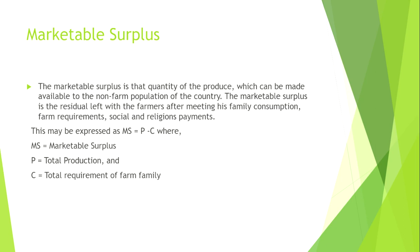Marketable surplus is the quantity of the produce which can be made available to the non-farm populations of the country. The marketable surplus is the residual left with the farmer after meeting his family requirement, farm requirement, and social and religious payments. So in marketable surplus, what happens is: from the total production, the total requirement — family requirement and livestock requirement — is deducted, and the difference is the marketable surplus.